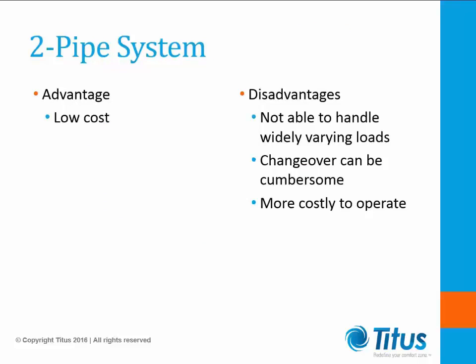The advantages of a two-pipe system are that it has half the piping of a four-pipe system and therefore a lower installed cost. Some of the disadvantages are that the unit can only heat or cool, but not both. If part of the building needs heating while the other part needs cooling, this can be a problem for a two-pipe system.